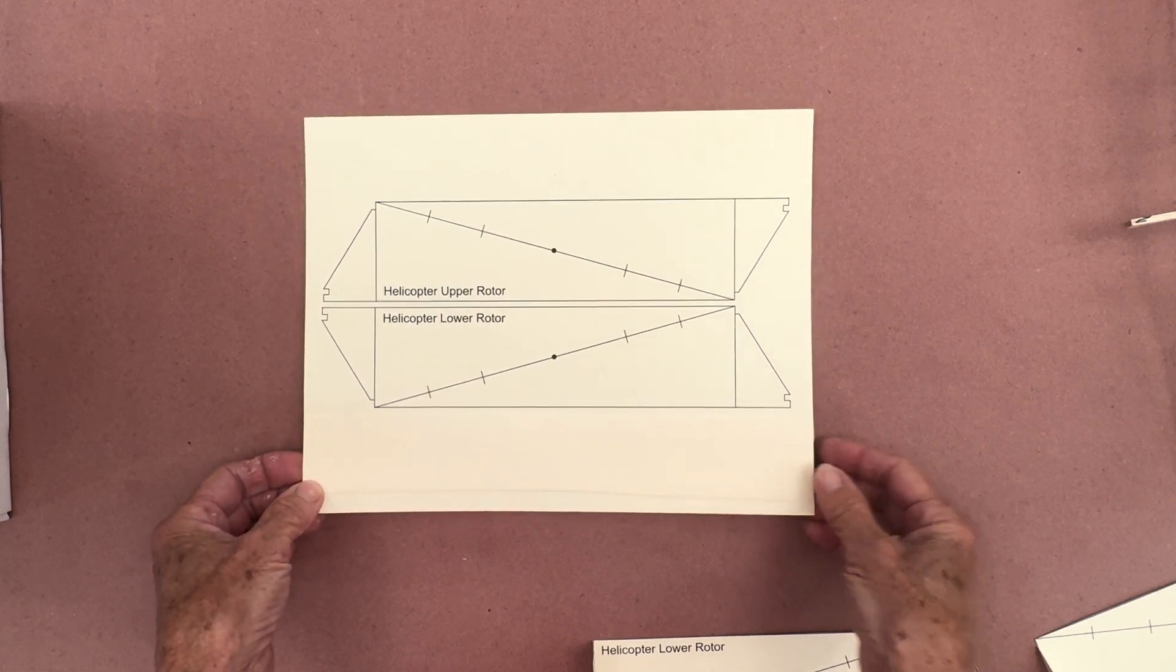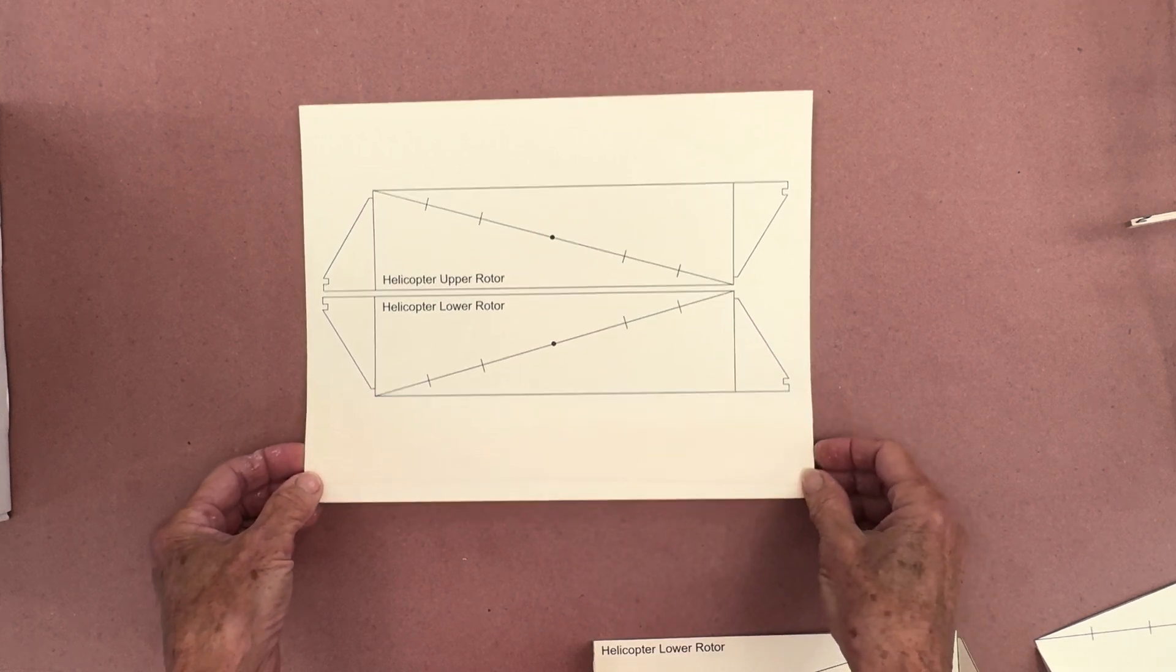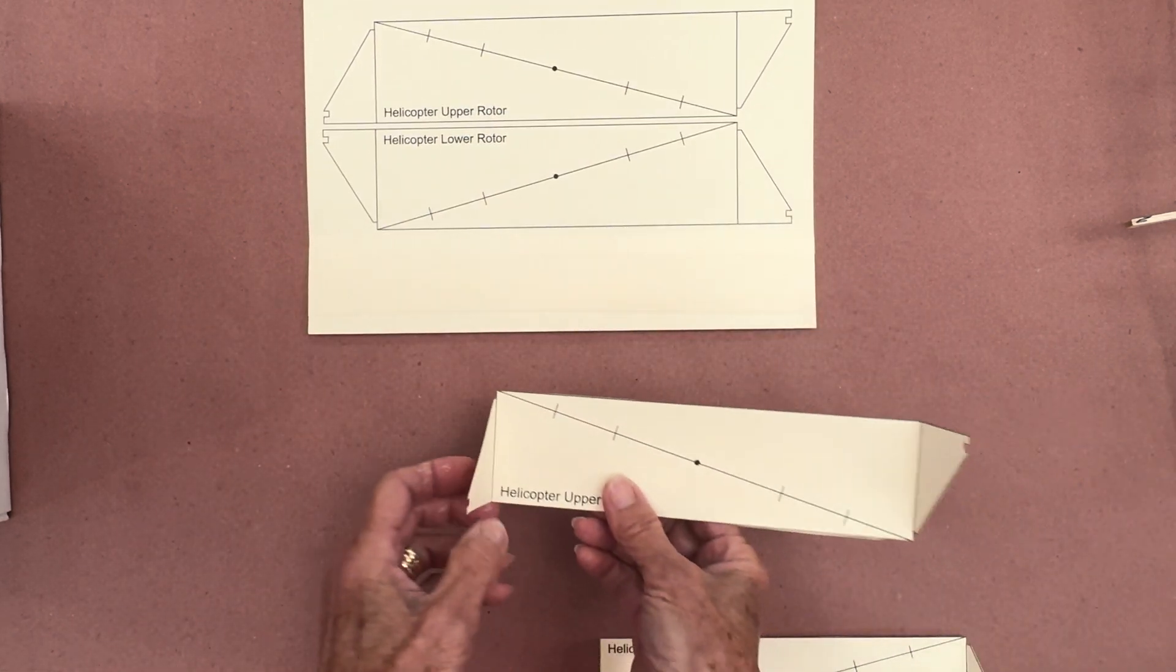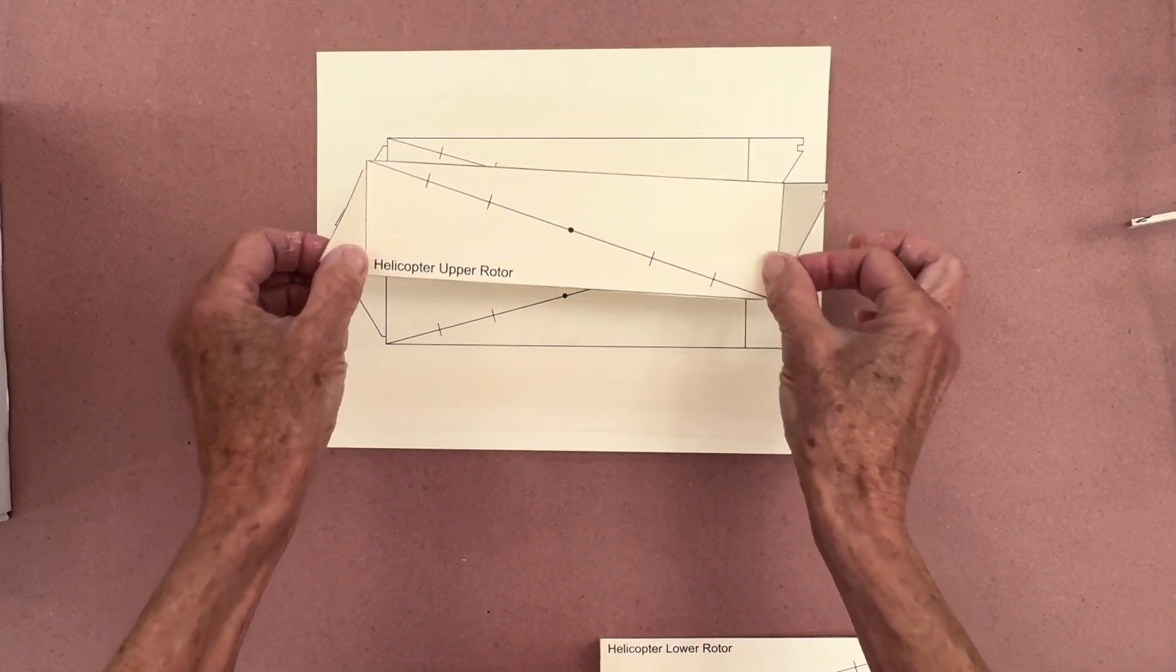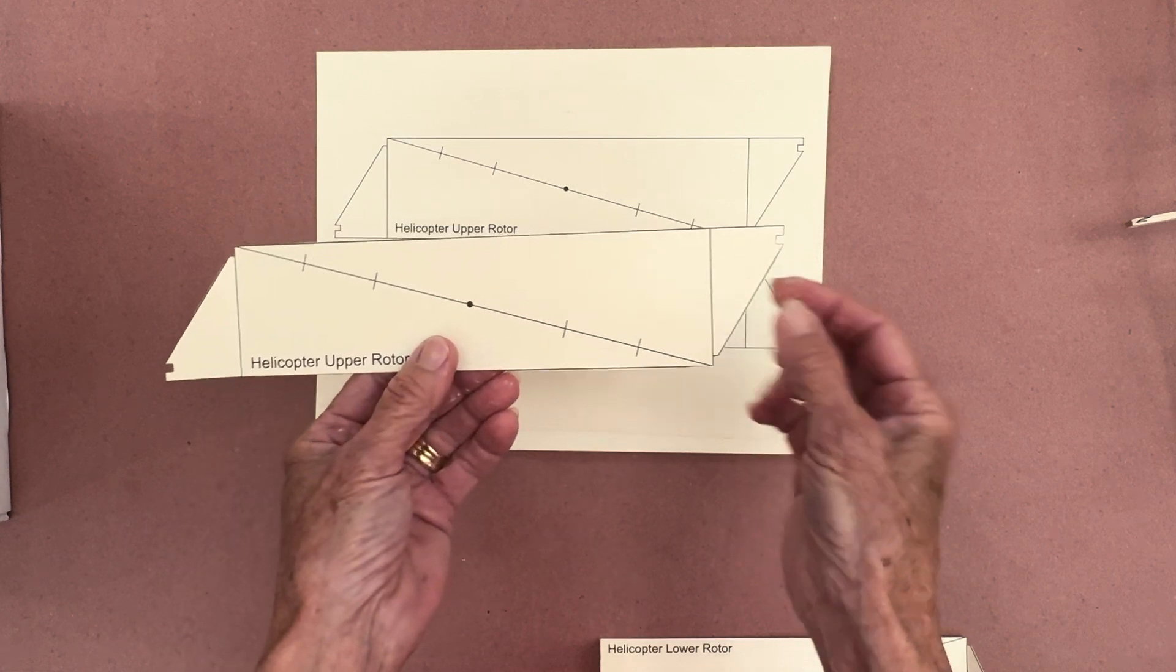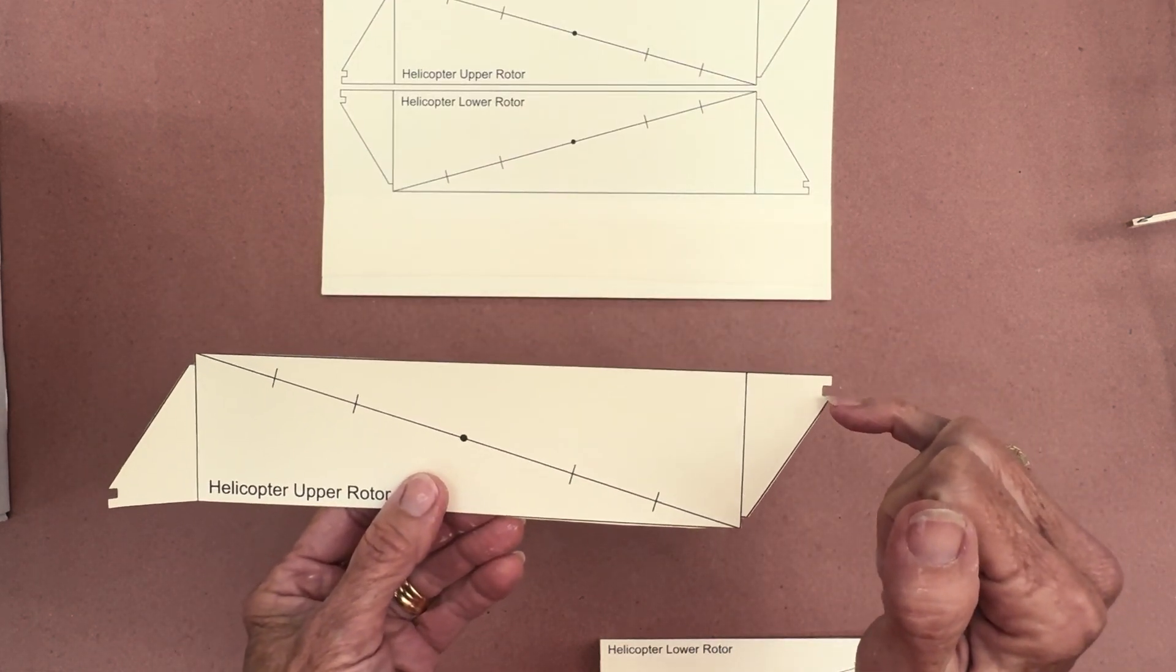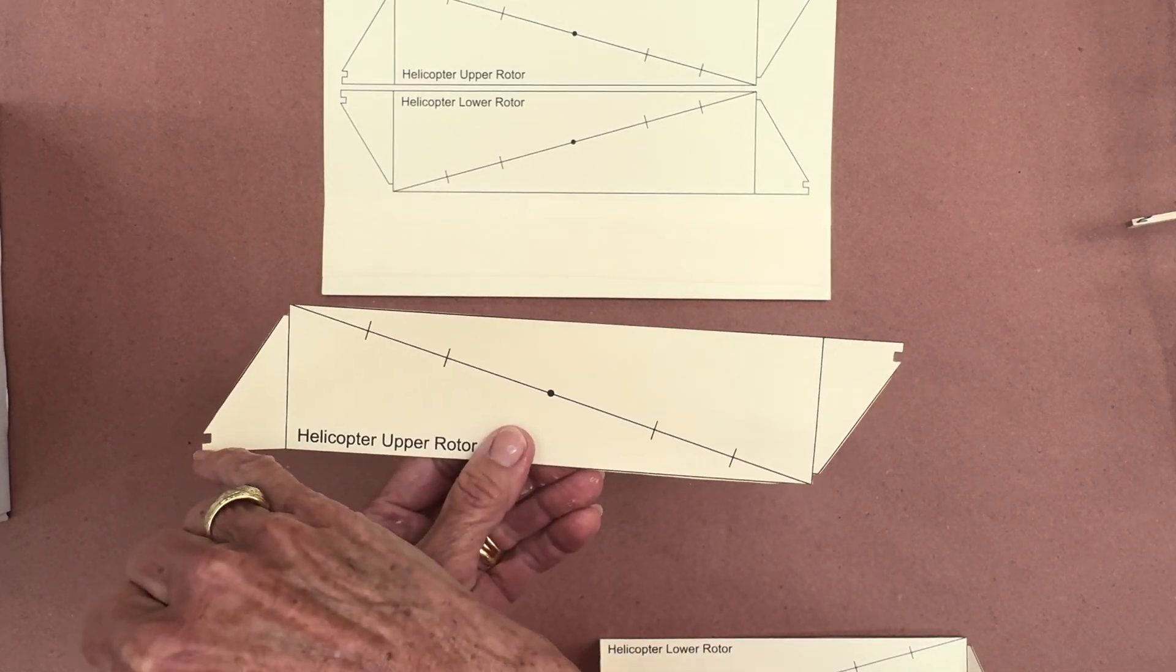This is the template, and from this template, you'll notice there's an upper rotor and a lower rotor. Students are going to cut that out, and this is the cutout of the upper rotor. They need to make sure that they cut out all these little notches, this notch here, the one down here, and these two sides here.